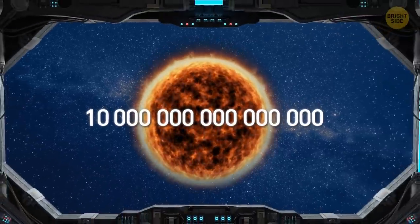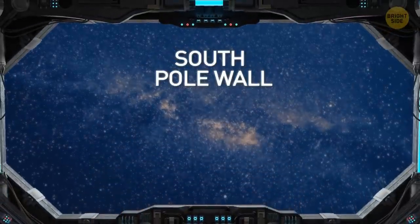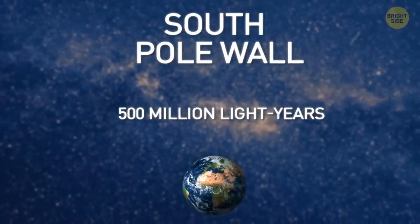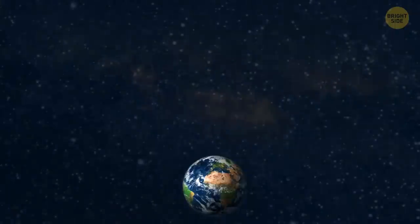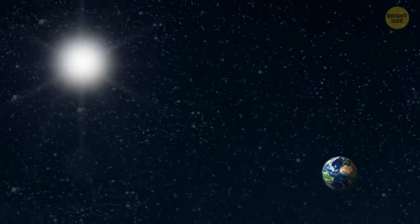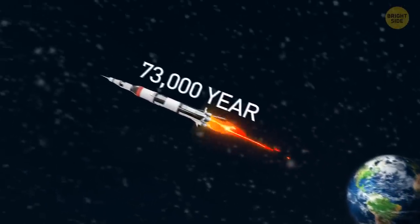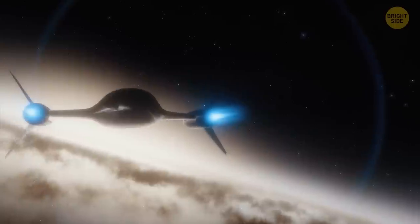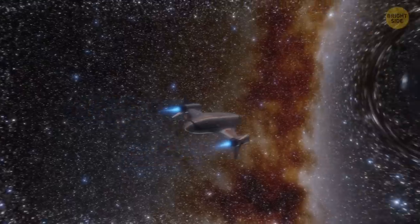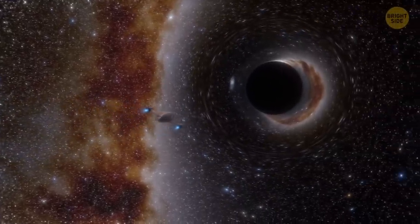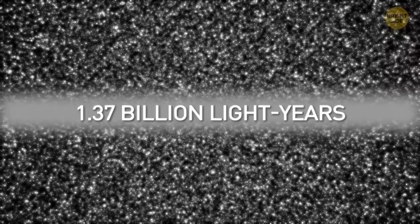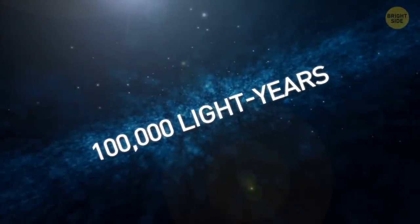This giant structure is called the South Pole Wall. It's located about 500 million light-years from Earth. By comparison, the closest star to our home is Proxima Centauri, and it's about 4.2 light-years away. Rockets can cover that distance in about 73,000 years. So the journey to the South Pole Wall may take longer than our solar system exists. And this wall is simply gigantic, even on a cosmic scale. It's about 1.37 billion light-years long. To give you an idea of how large that is, the Milky Way is only 100,000 light-years wide.